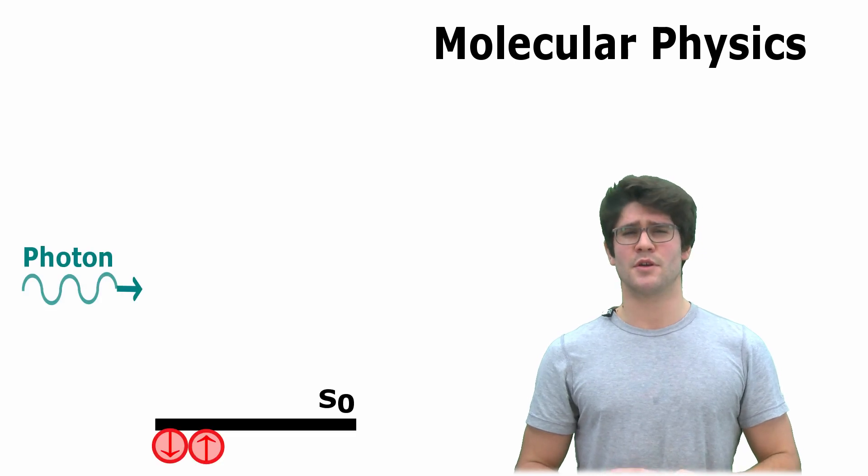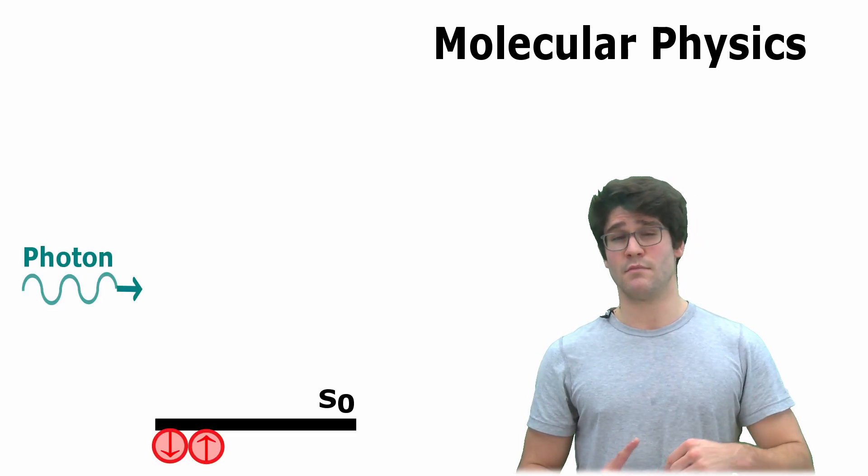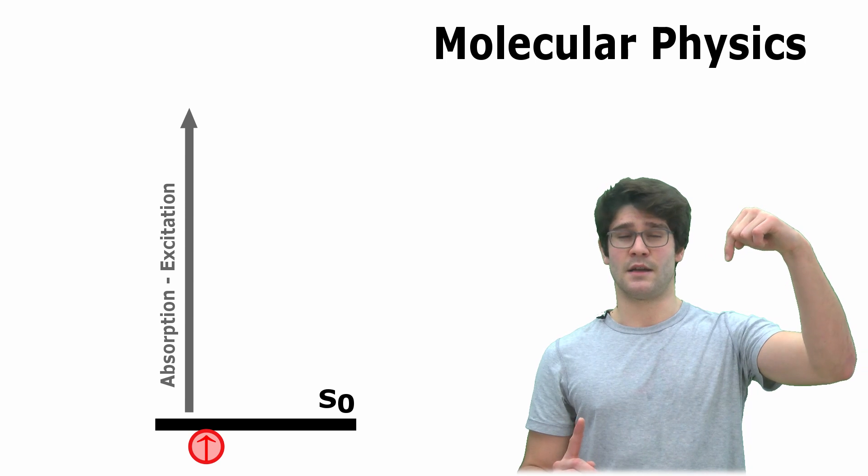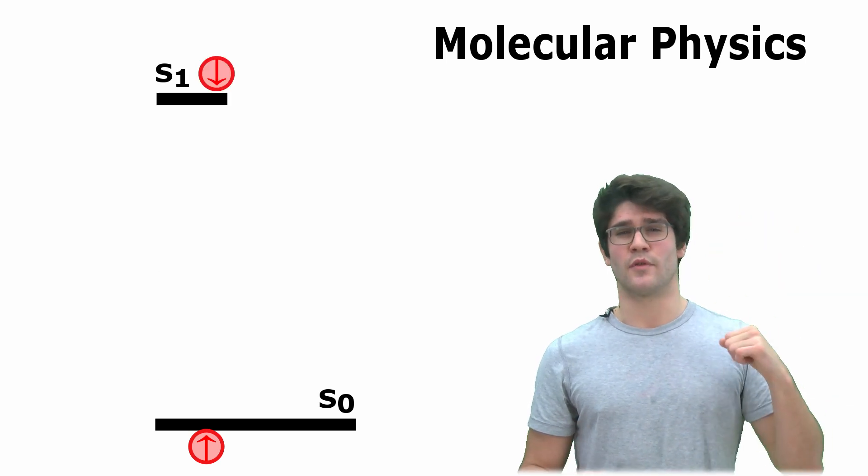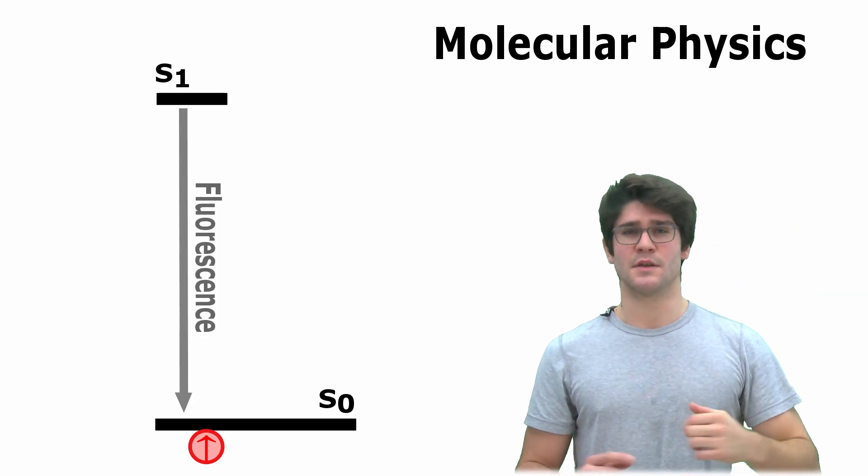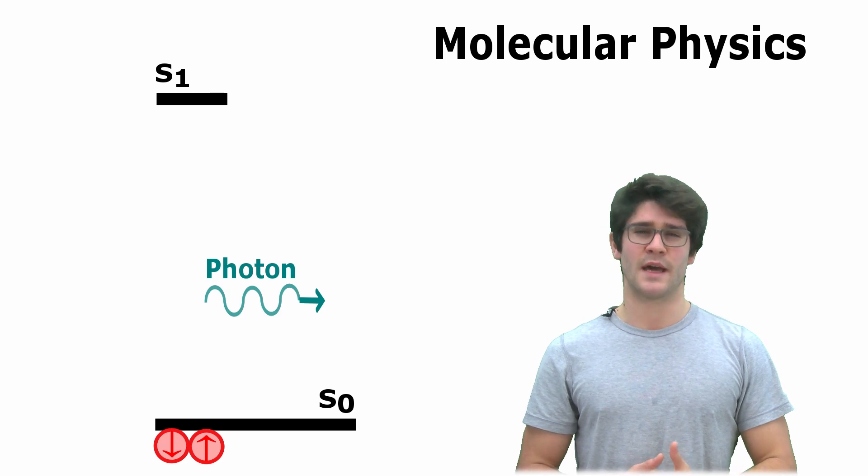Generally, photon absorption is from the singlet ground state, S zero, to an excited state, for example, S one. Fluorescence is the inverse process, when the excited state radiates back to the ground state.